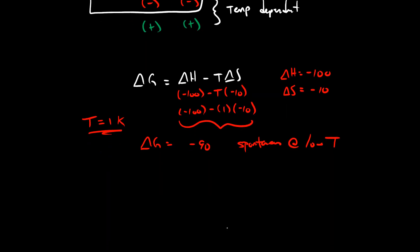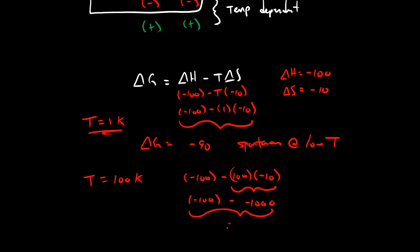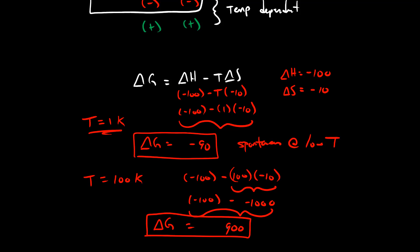What happens if we increase the temperature up to 100 Kelvin? We now have negative 100 minus 100 times negative 10. That gives us negative 100 minus negative 1,000, for a total of positive 900. So delta G is 900 — we've gone from a spontaneous reaction to a non-spontaneous reaction. It's non-spontaneous at high temperatures.